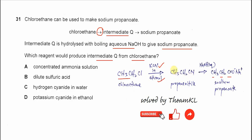So this is the intermediate Q — propanenitrile — and it will undergo hydrolysis. The CN triple bond will break, and the nitrogen will leave as ammonia. This carbon will convert to the carboxylic acid COOH. Because the hydrolysis is done with boiling aqueous sodium hydroxide, the propanoic acid will further react with the hydroxide to form the sodium salt.